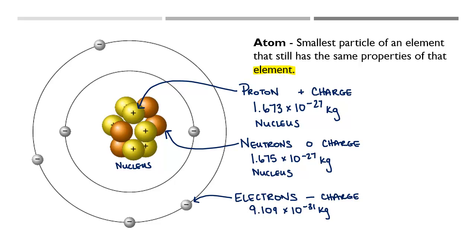So way, way smaller than both protons and neutrons. And they are located in a place called the electron cloud. And that is found outside of the nucleus.